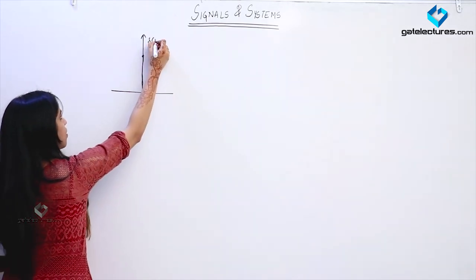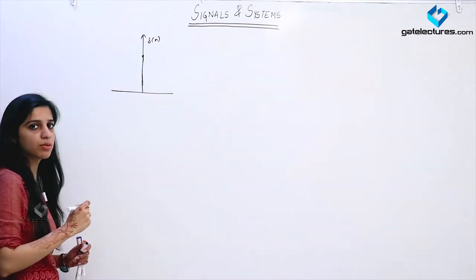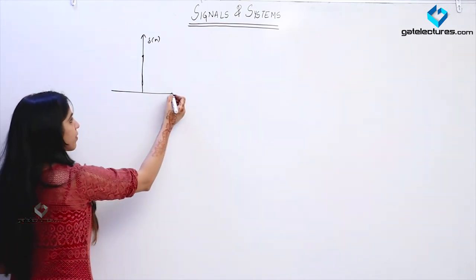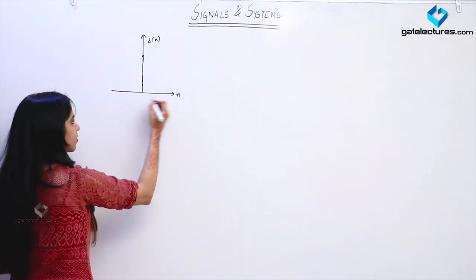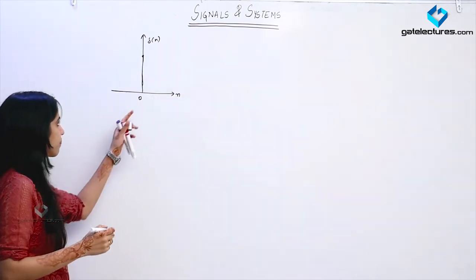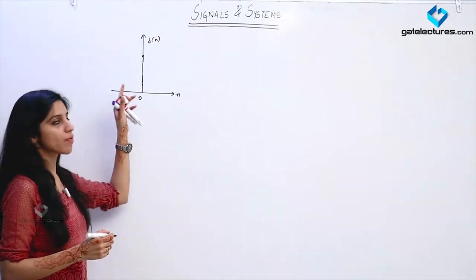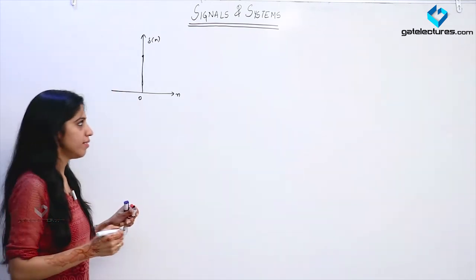This is how a unit impulse signal looks like. It appears only at n equal to 0 with the value of 1.